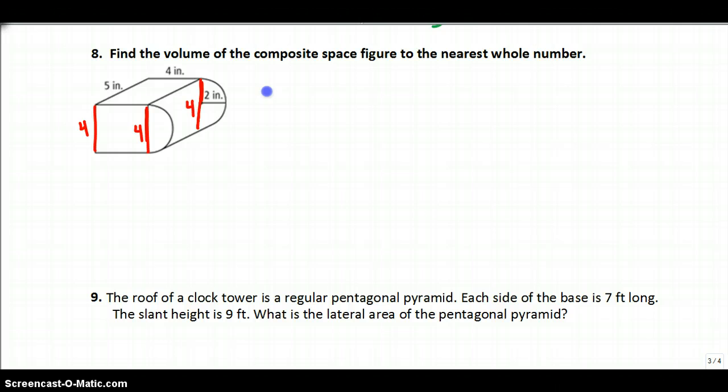Let's find the volume of the prism first. Prism is pretty easy. Volume is area of the base times the height. I don't care which base you use. Let's go ahead and use this one. What's the area of the base? Well, it's five times four, which is 20, and then the height of the prism is that other number you didn't use, which is this one, so it's four. So you get 80 cubic inches. That's the prism part.